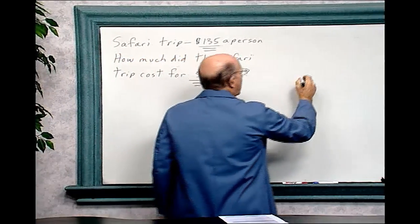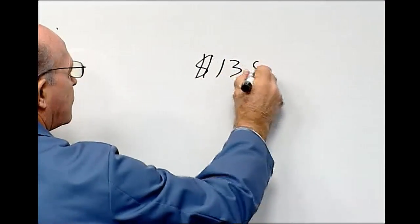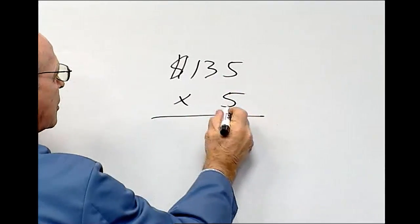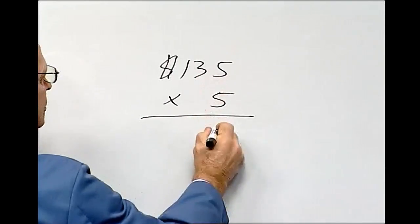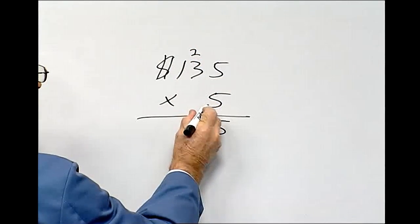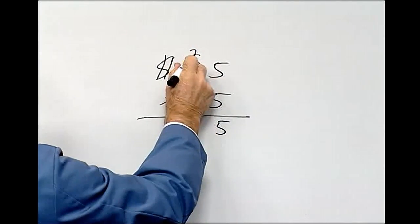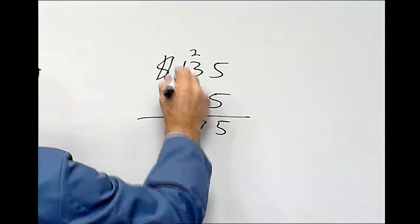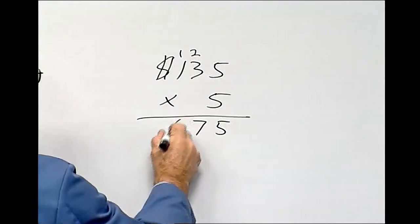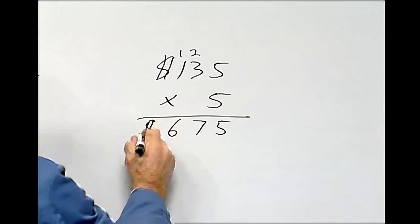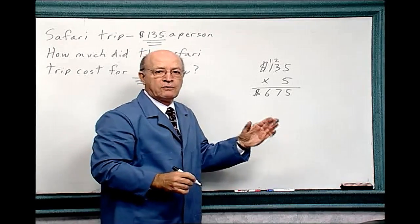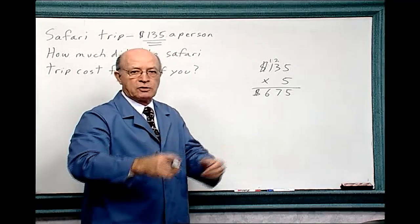So we've got to multiply 135 times 5. Five times five is 25, and we carry over the 2. Five times three is 15, and we add that 2, which makes 17. Five times one is five, plus one is six. So that trip would cost $675 for five people going on that safari trip.